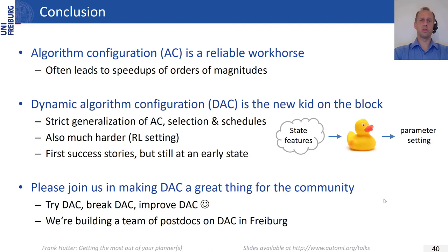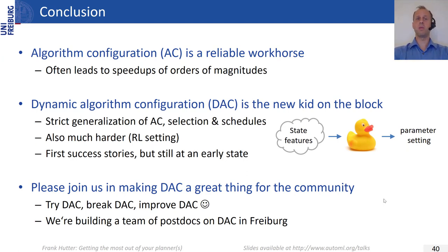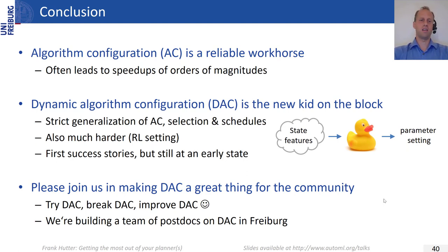In conclusion: algorithm configuration is a reliable workhorse that has often led to speedups of orders of magnitude. DAC is a strict generalization of algorithm configuration, selection, and schedules — very powerful, but harder, requiring reinforcement learning. We have first success stories, but it's still early. We're building a team of postdocs on DAC in Freiburg — try DAC, break DAC, improve DAC. Thank you very much, and I look forward to cool discussions.